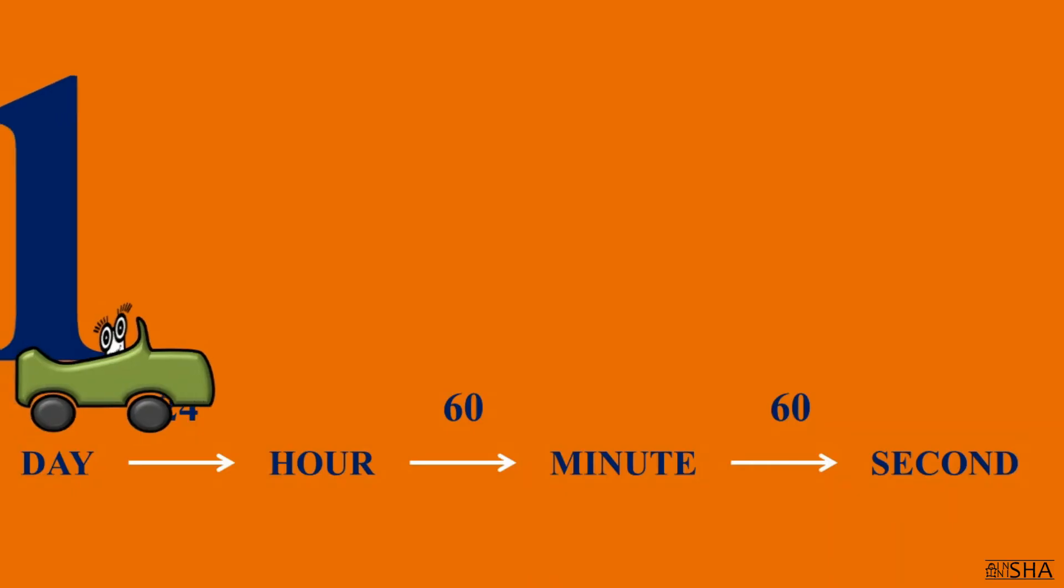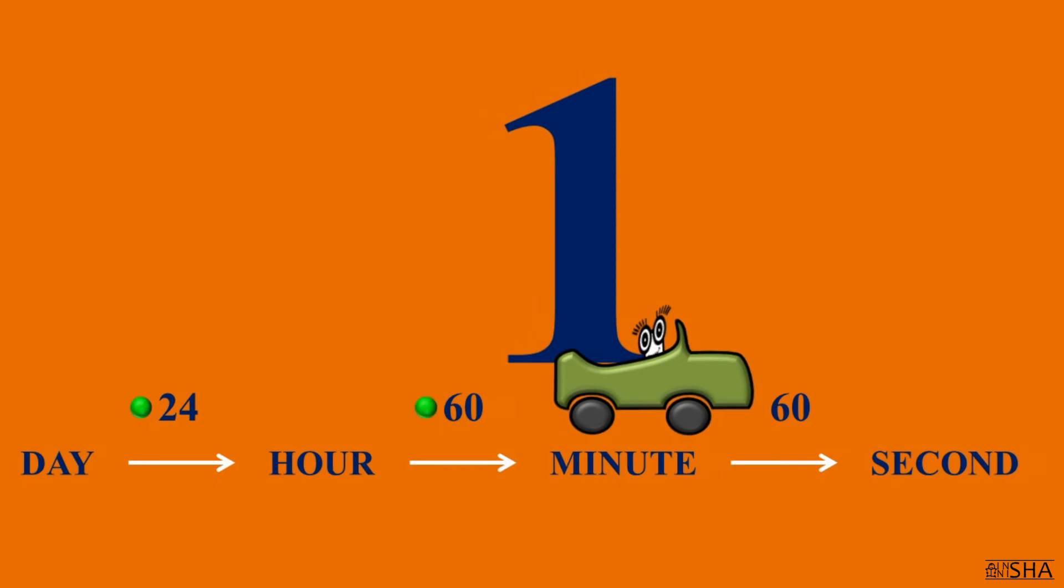It happens so rarely, but still sometimes you might need to convert a day into minutes or seconds. If necessary, you can easily do this according to this chain. To convert days into minutes, firstly you need to multiply the number of days by 24, and then by 60. And so on along the chain.